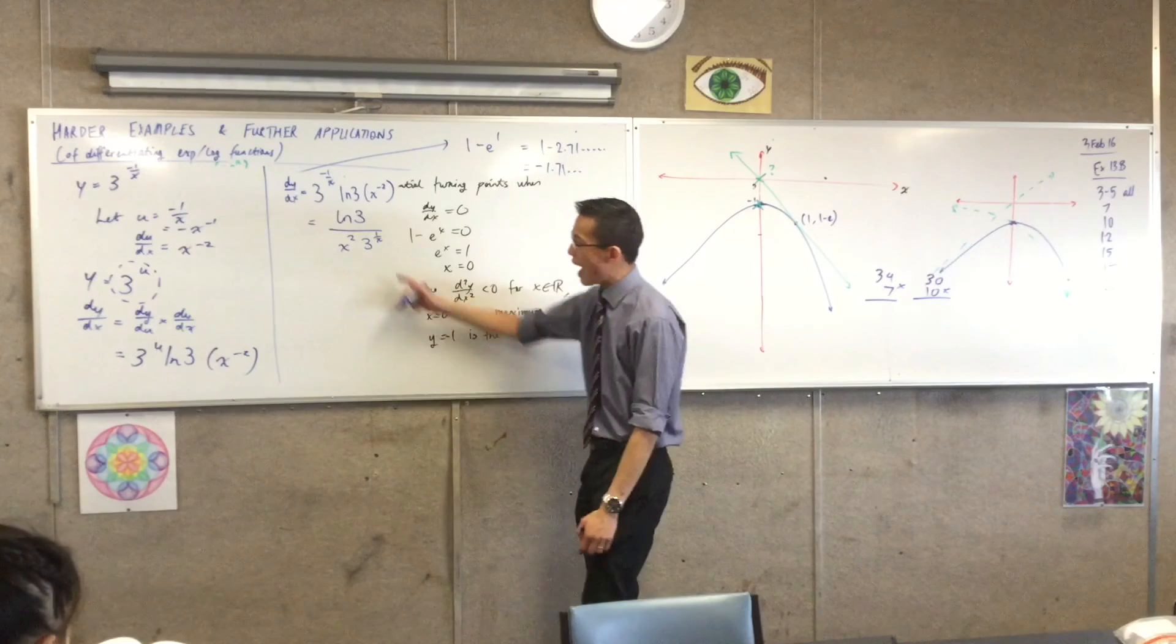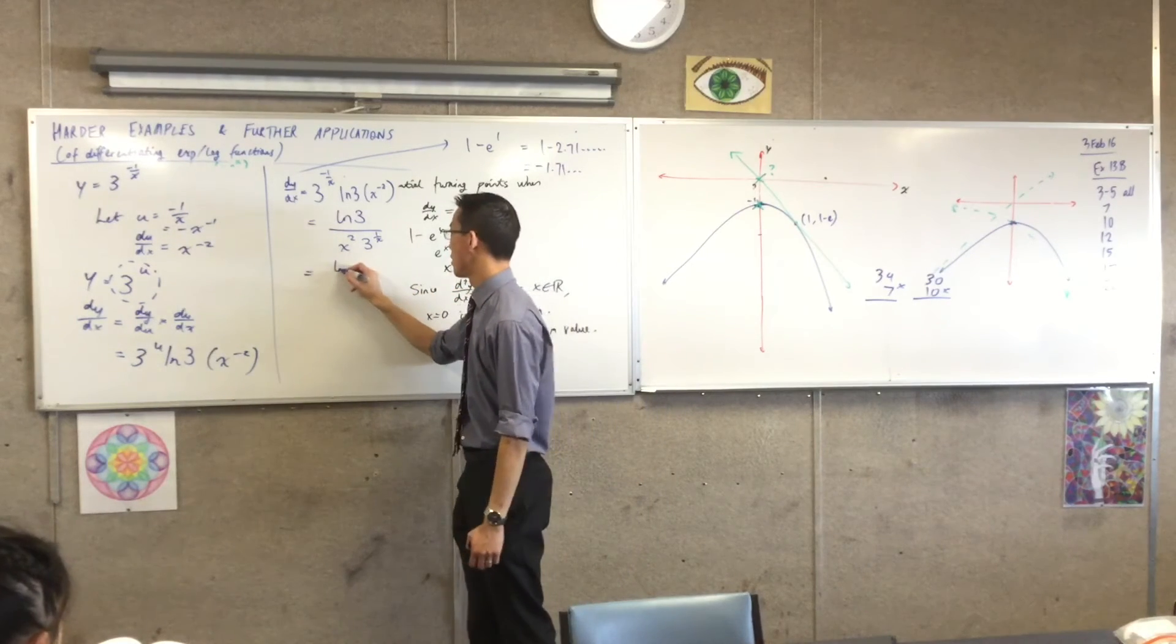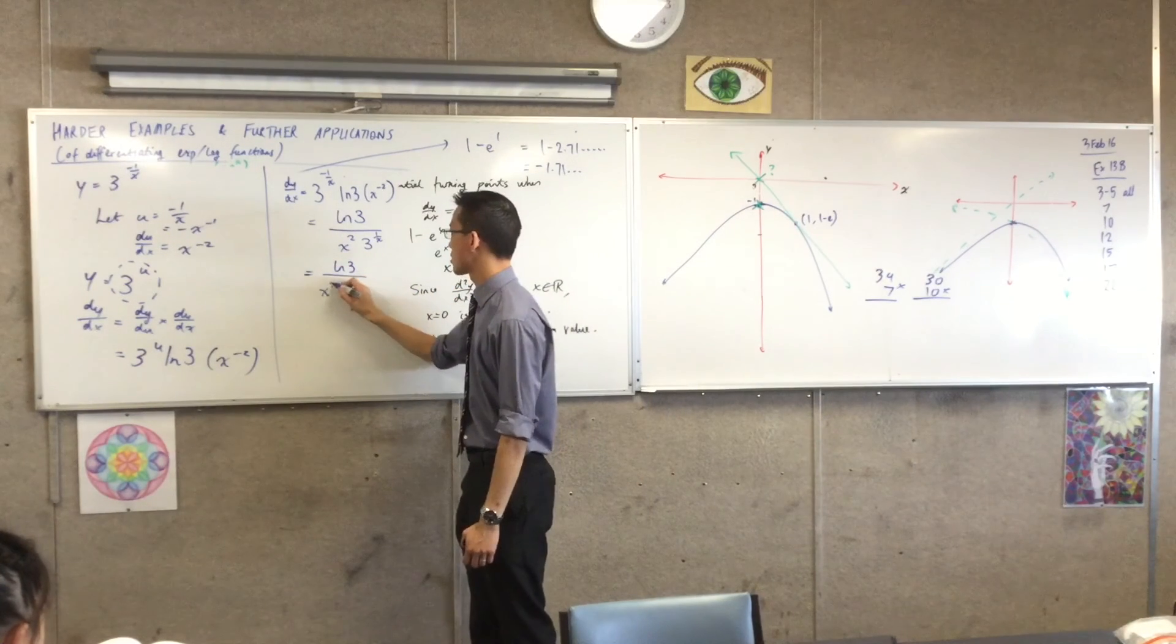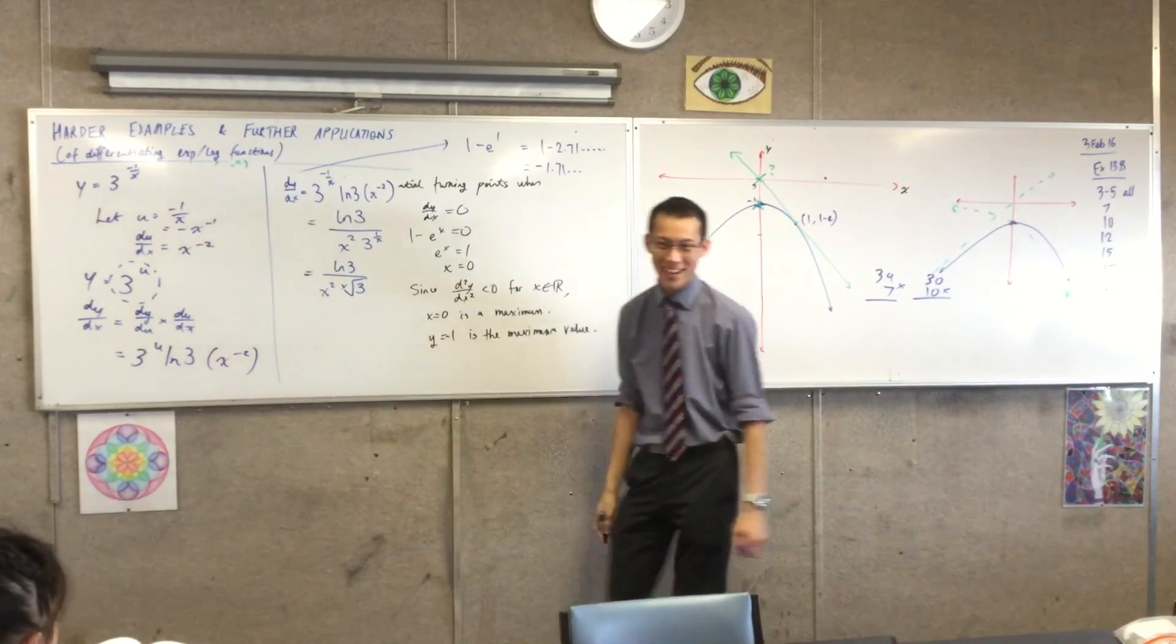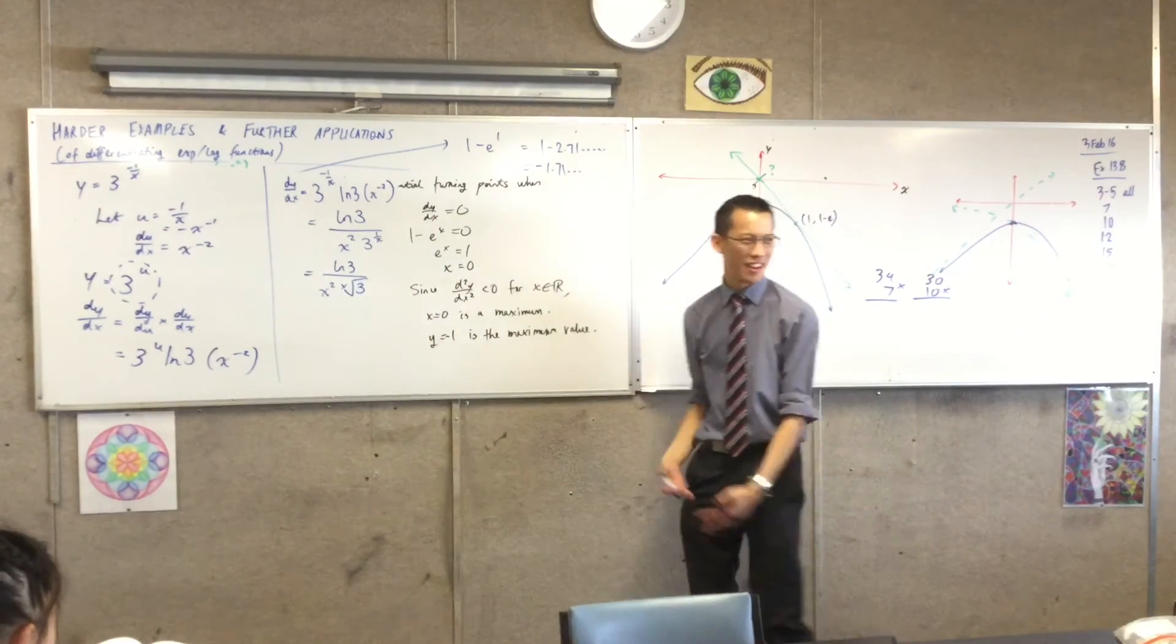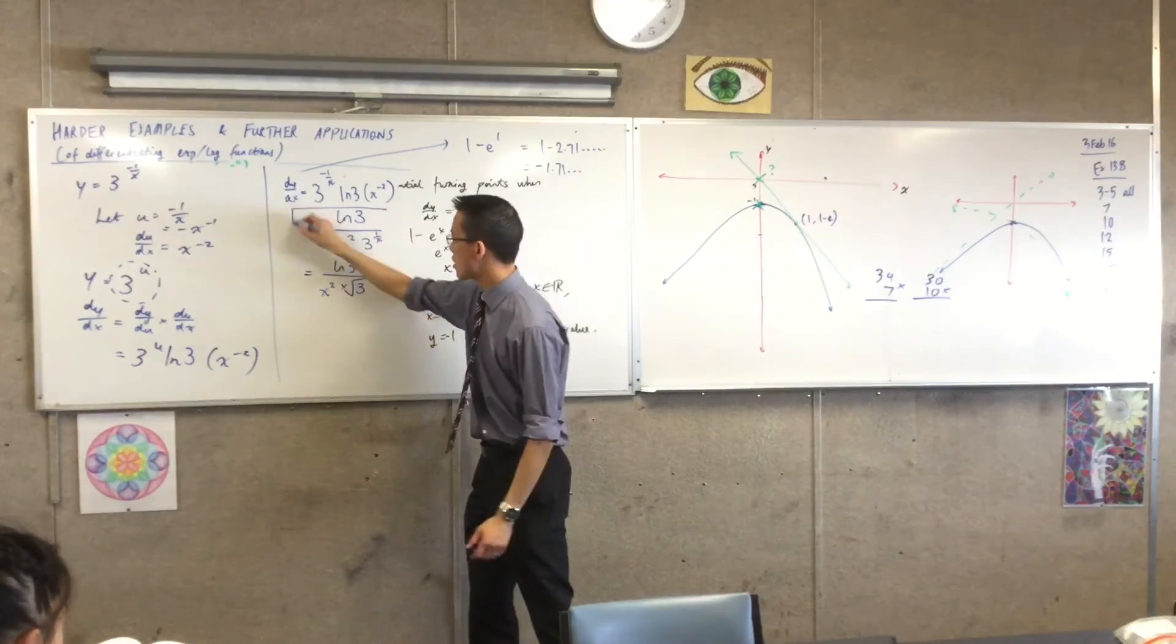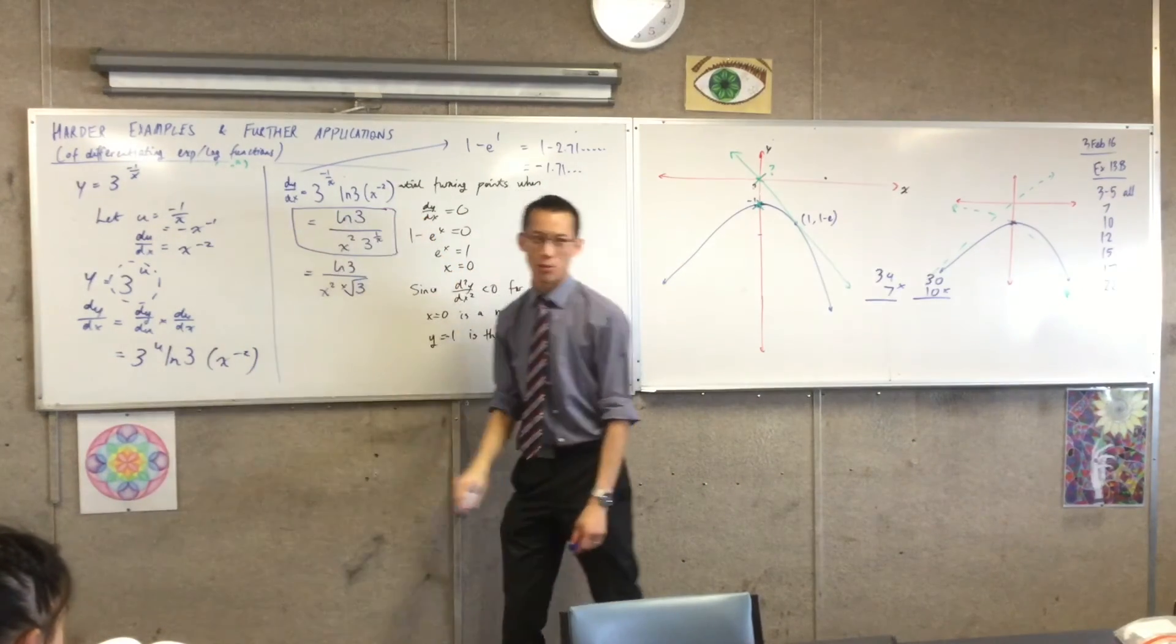I mean, if I wanted to, I could get rid of the fractional power. Log 3 over x squared. That's actually the x root of 3. That's kind of awkward. That's weird. I don't think there's any clear advantage of this line or this line. So that is where I would end.